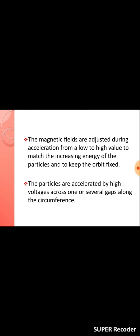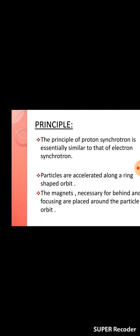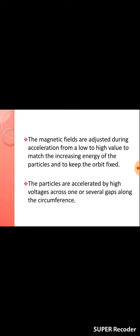The protons are accelerated by high voltages across one or several gaps along the circumference. The principle of proton synchrotron and electron synchrotron are essentially similar. The basic difference is that in the proton synchrotron the particle is the proton, as opposed to the electron synchrotron studied in earlier degree classes.